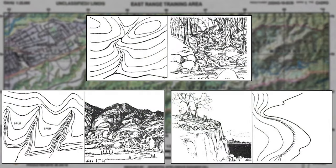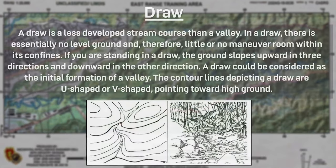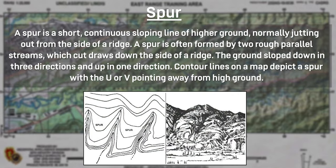There are three minor terrain features: draws, spurs, and cliffs. A draw is a stream course that is less developed than a valley. In a draw there is essentially no level ground and little or no maneuver room. The ground slopes upward in three directions and downward in one, and contour lines depicting a draw are U-shaped or V-shaped pointing toward the higher ground. A spur is a short continuous sloping line of higher ground normally jutting out from the side of a ridge, often formed by two roughly parallel streams cutting draws down the side of a ridge. The ground slopes down in three directions and up in one. Contour lines depict a spur with the U or V pointing away from the higher ground.